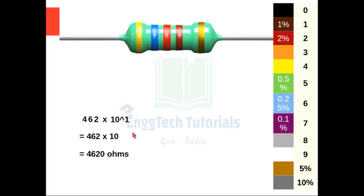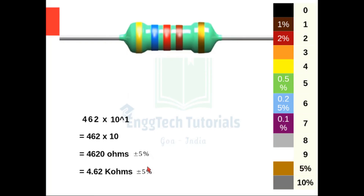That gives us 4620 ohms. The last color is golden, and golden corresponds to a tolerance of 5%, so we write it as plus or minus 5%. Another way of writing 4620 is 4.62 kilo ohms with a tolerance level of plus or minus 5%.